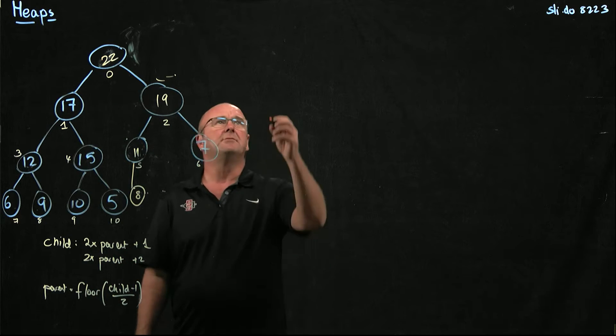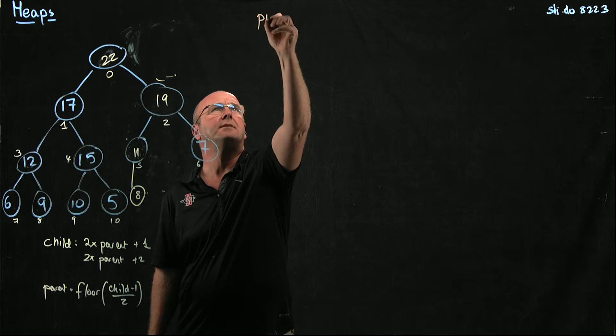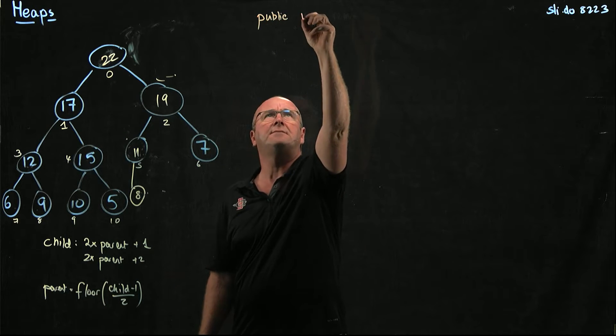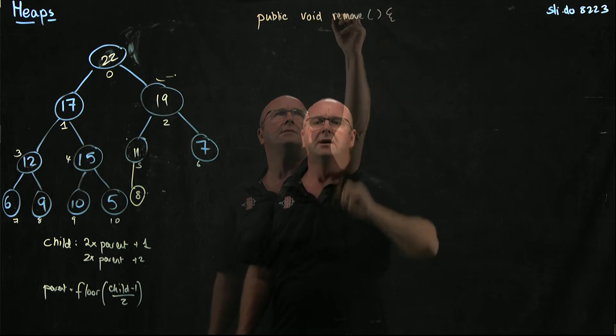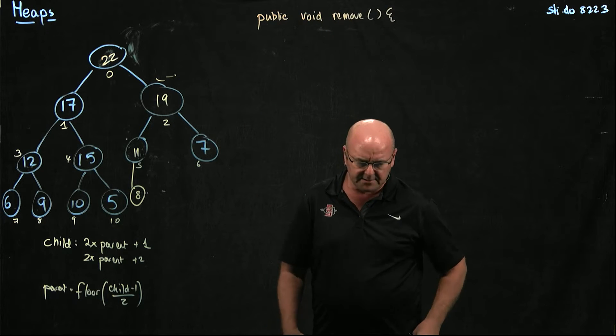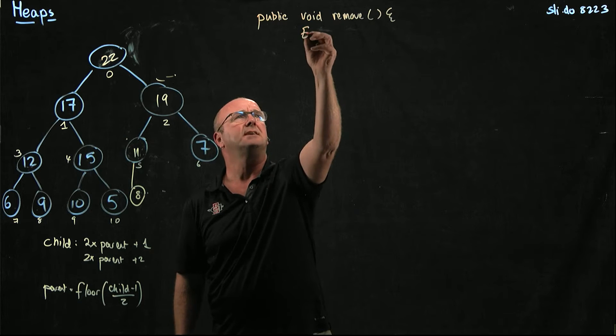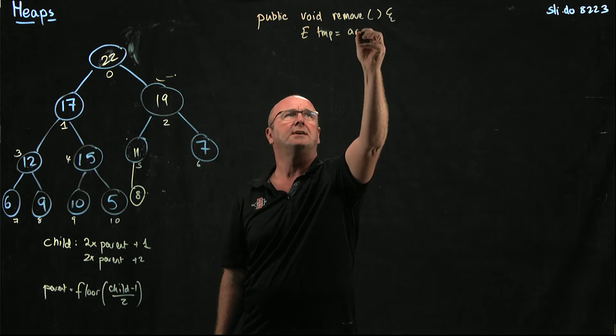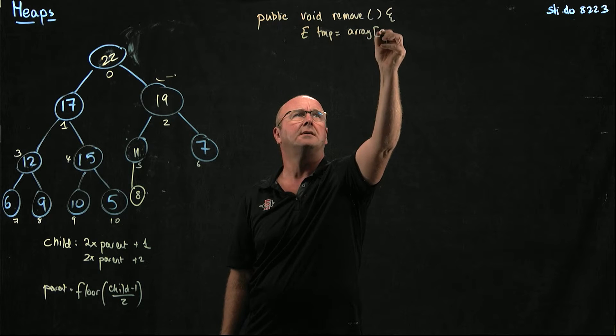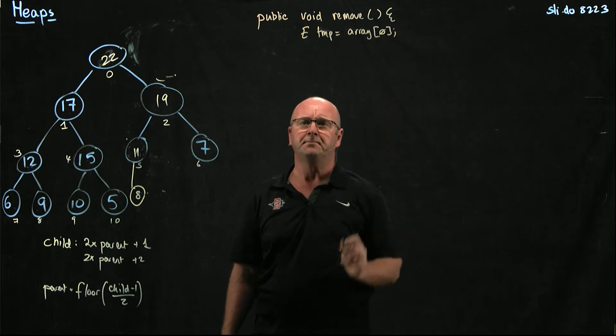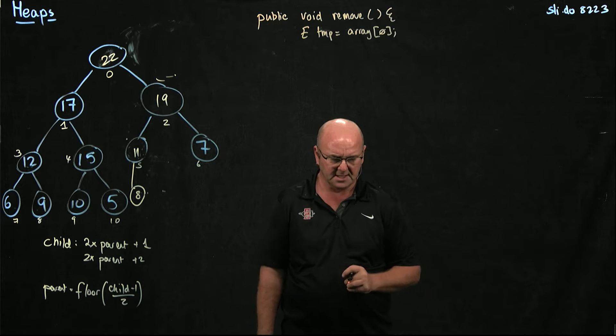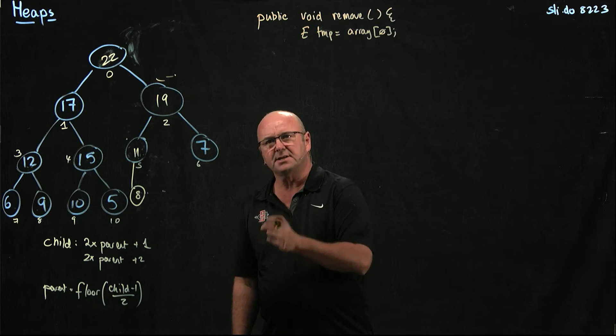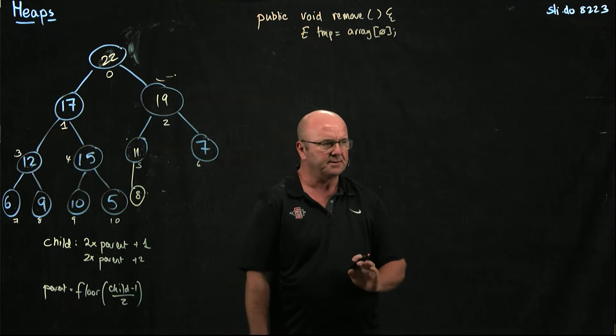So our remove method from our heap starts off by taking the value of the thing that's at the root, so let's say etemp equals array 0. So we've just remembered that object, and we're going to return that when we're done with the remove.